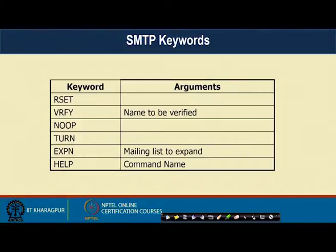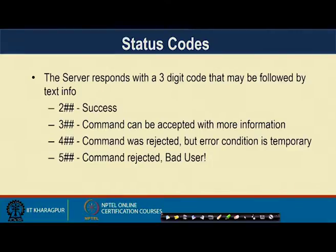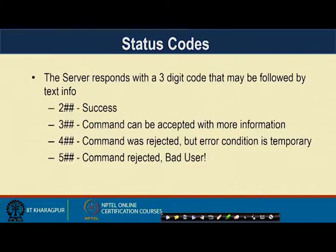There are additional SMTP keywords: RSET (reset), VRFY (verify name), NOOP, TURN, EXPN (expand mailing list), and HELP. There are also status codes: 2xx indicates success, 3xx means the command can be accepted with more information, 4xx means the command was rejected with a temporary error condition, and 5xx means command rejected due to bad user.